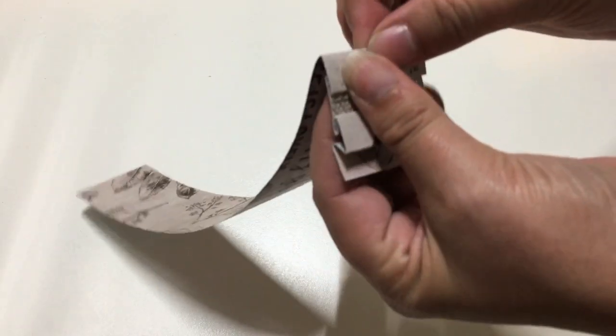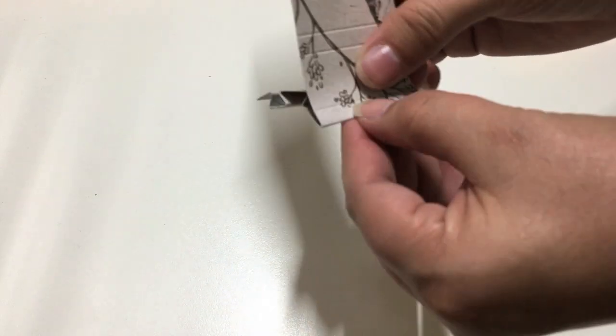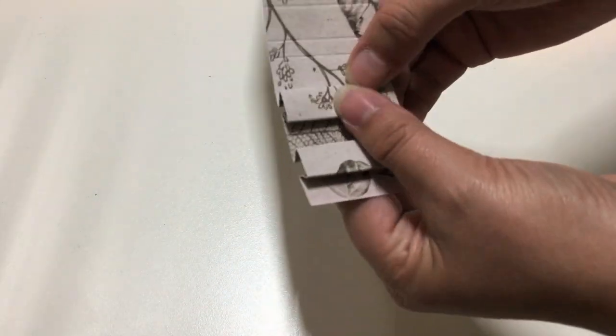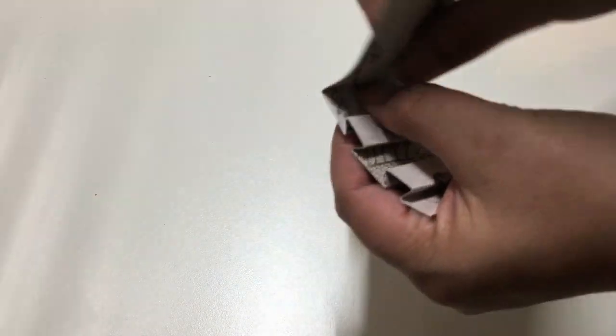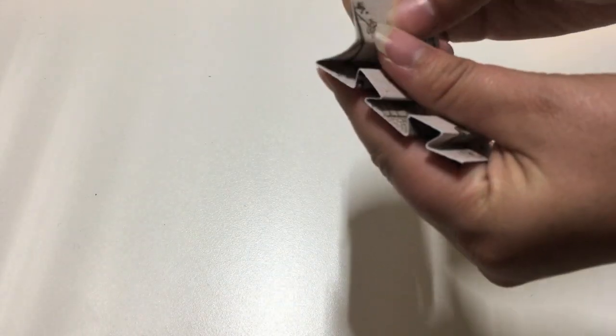You'll fold this box pleat so that the half inch sections are raised and you'll be using those quarter inch sections to create the texture, the dimension.